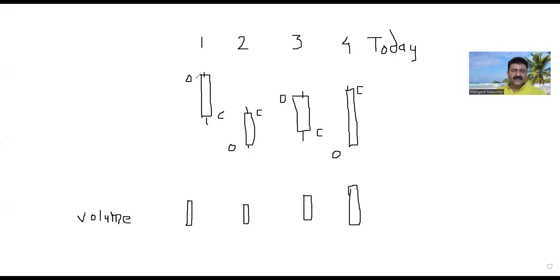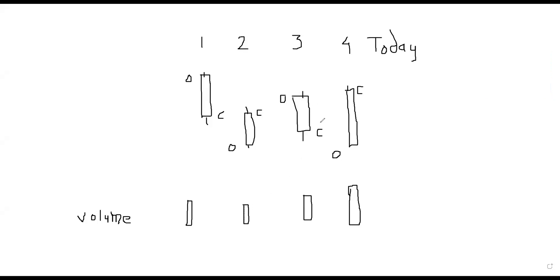Where open is at the top and close is at the bottom, that is a red candle. Where open is below and close is above, that is a green candle. Where open is above and close is below, that is again a red candle. Now, for these past three candles, today's close should be greater than all three previous closes. Color does not matter, high and low do not matter.